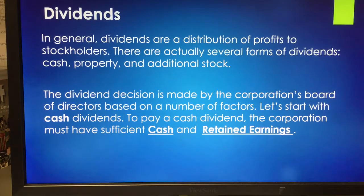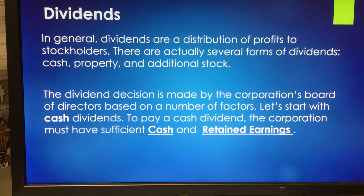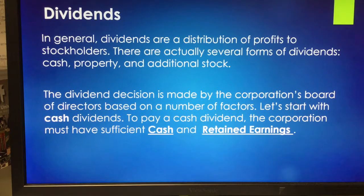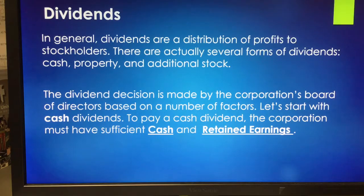Dividends are a distribution of profits to stockholders, and there are numerous forms: cash, property, and even additional stock dividends. The dividend decision is made by the corporation's board of directors. A corporation generally is required to have a stockholders' meeting annually and four quarterly board of directors meetings, where high-level decisions are discussed — acquiring another company, paying dividends, borrowing money, changes in top management.